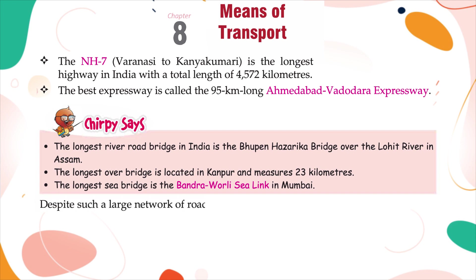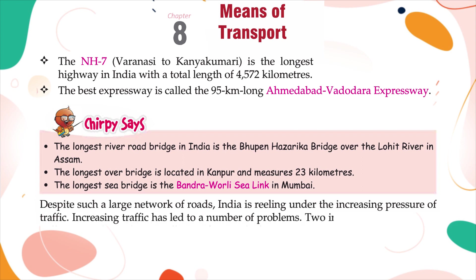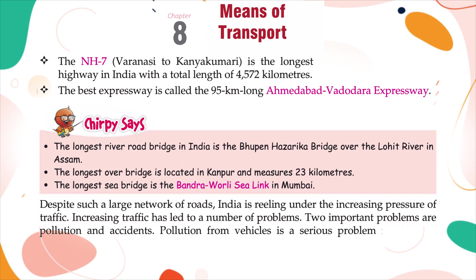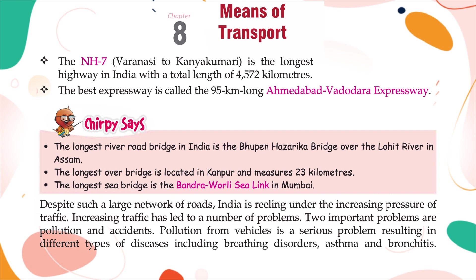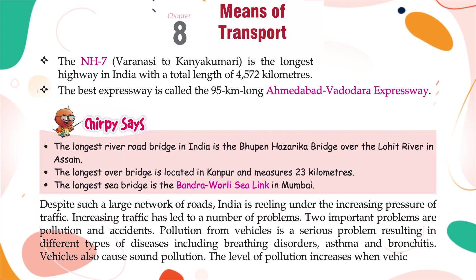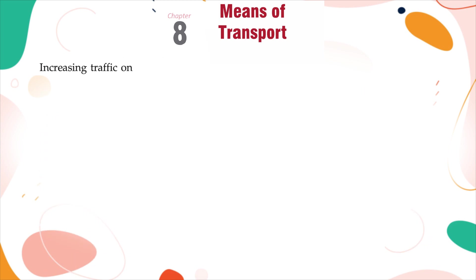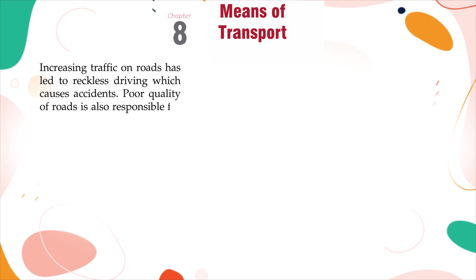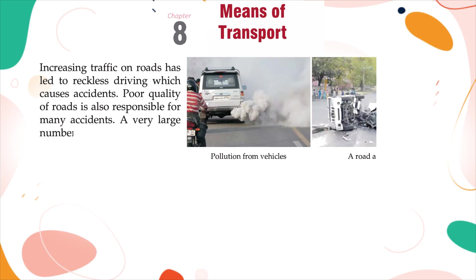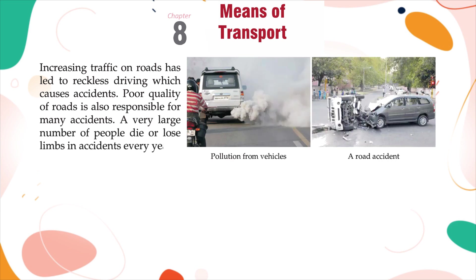Despite such a large network of roads, India is reeling under the increasing pressure of traffic. Increasing traffic has led to a number of problems. Two important problems are pollution and accidents. Pollution from vehicles is a serious problem, resulting in different types of diseases, including breathing disorders, asthma, and bronchitis. Vehicles also cause sound pollution. The level of pollution increases when vehicles are not well maintained. Increasing traffic on roads has led to reckless driving, which causes accidents. Poor quality of roads is also responsible for many accidents. A very large number of people die or lose limbs in accidents every year.